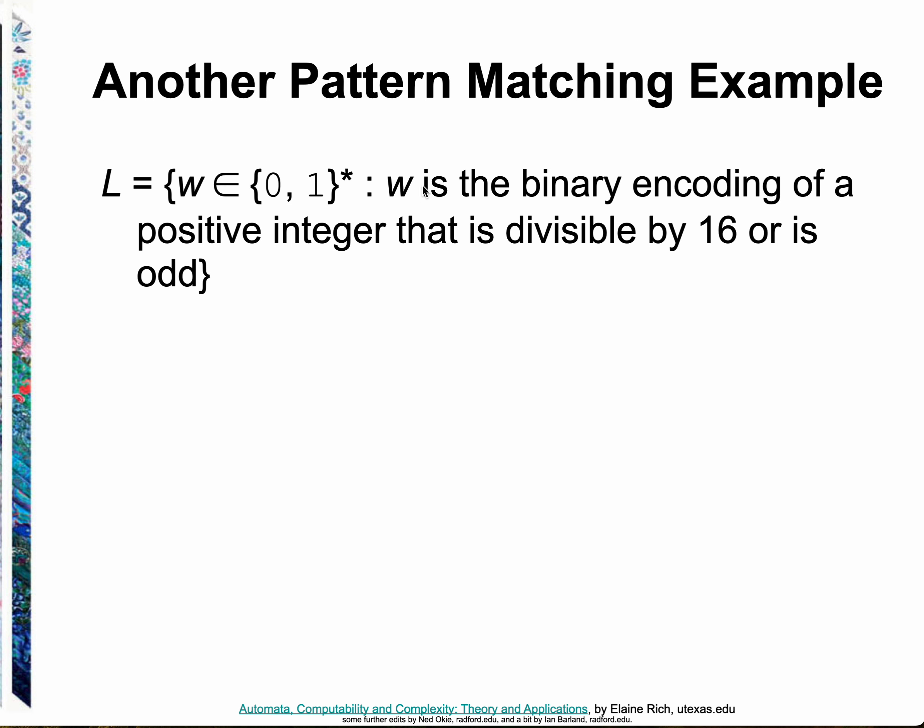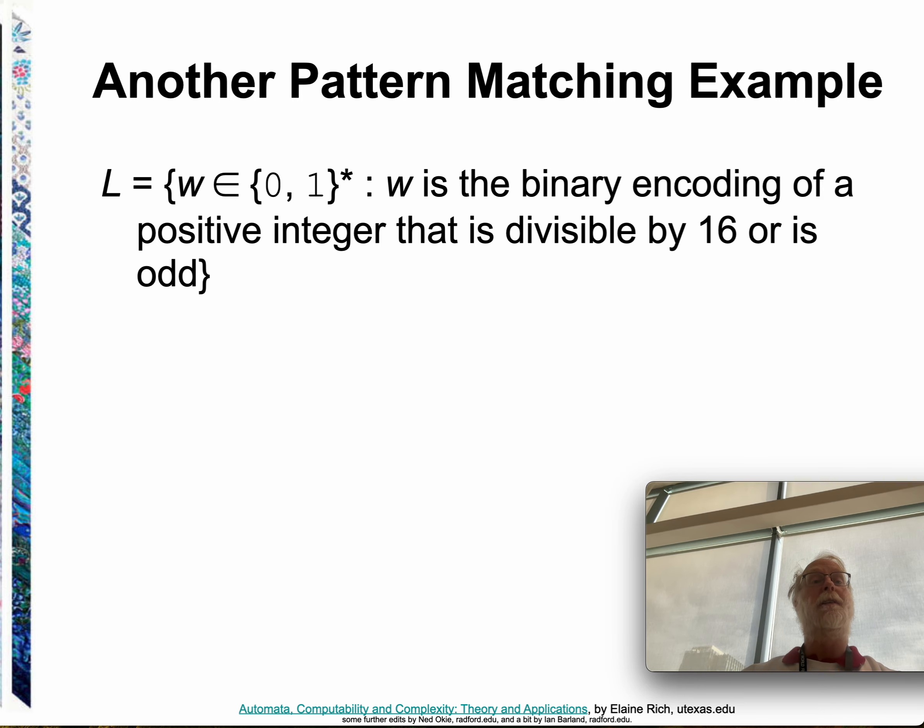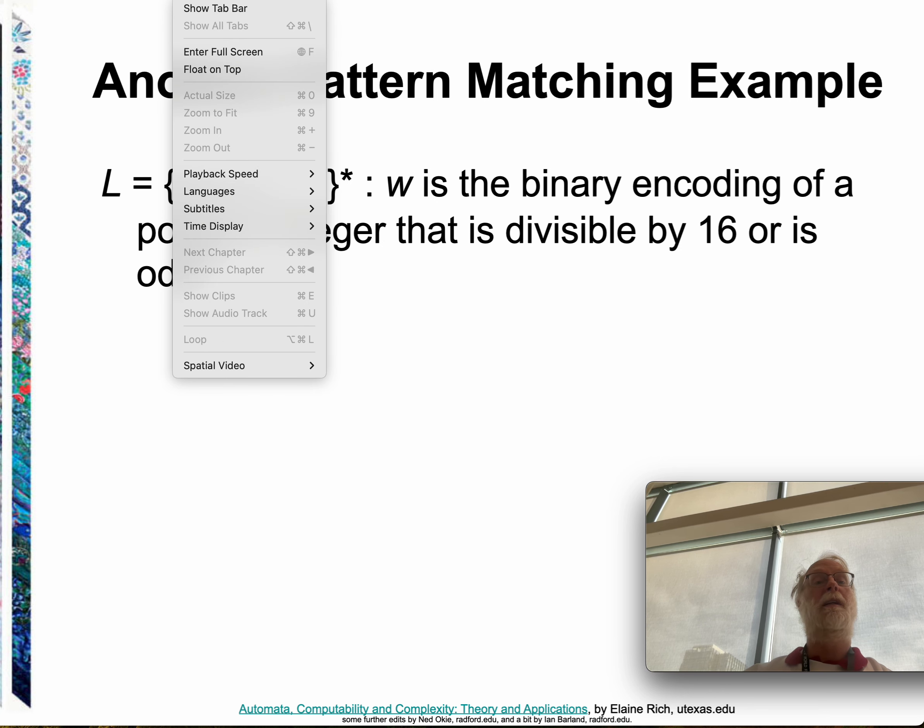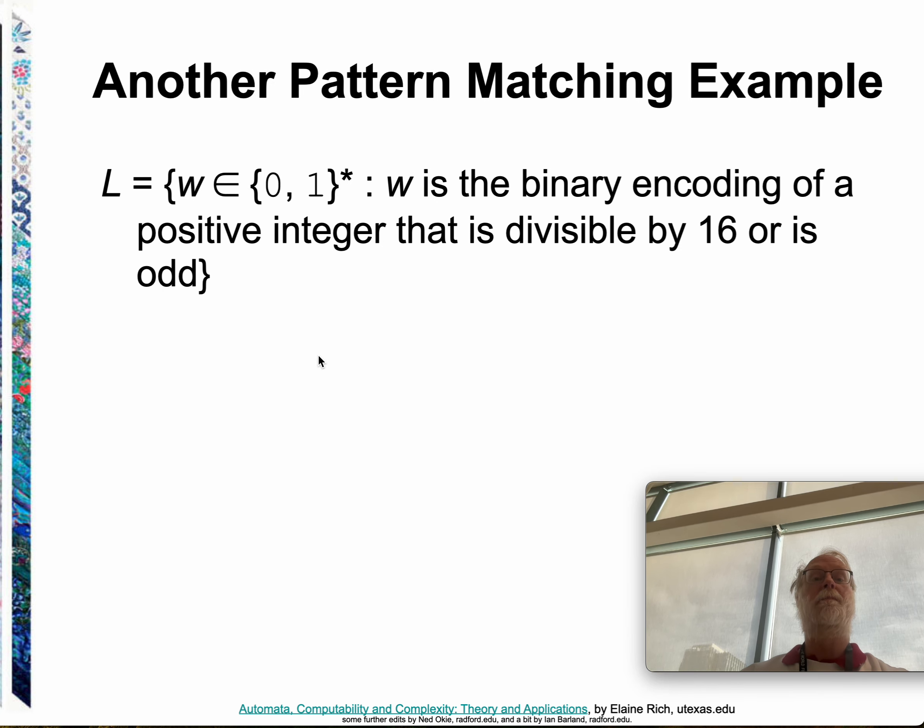More pattern matching here. Set of strings that are the binary encoding of a positive integer that is divisible by 16 or is odd. What's the binary encoding of an odd number? Last bit is one. We sort of saw how to do that. Divisible by 16, what does that mean? That means the last four bits are 1, 0, 0, 0, or just the last four bits are 0, 0, 0, 0, I believe. Because the last four bits are the remainder mod 16. We could go ahead and do that. It's not shown here. I'll let you think about doing that. Come ask on the discussion board if you're not sure how to do it. Come by office hours.